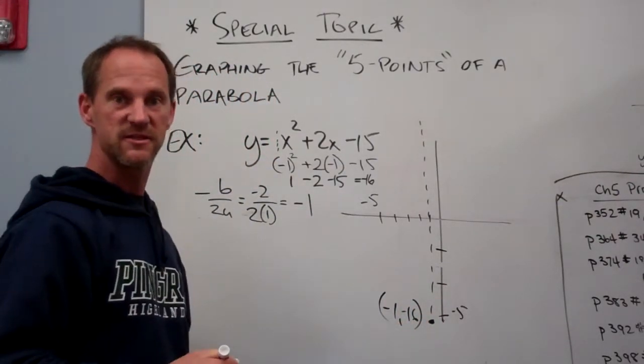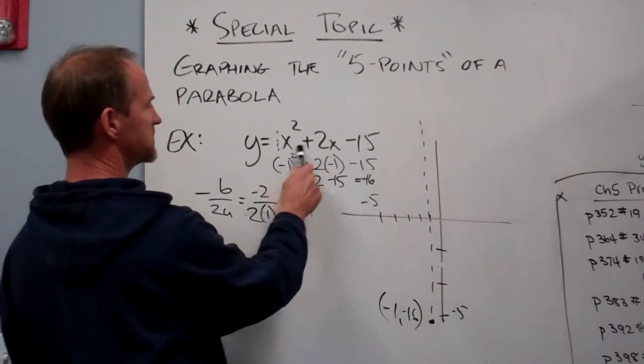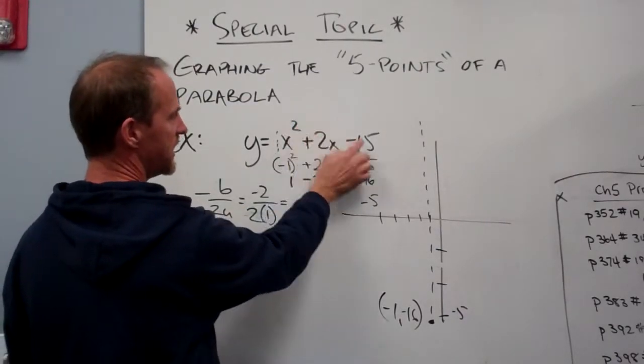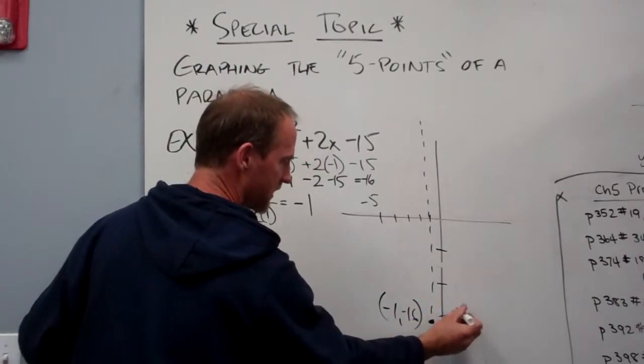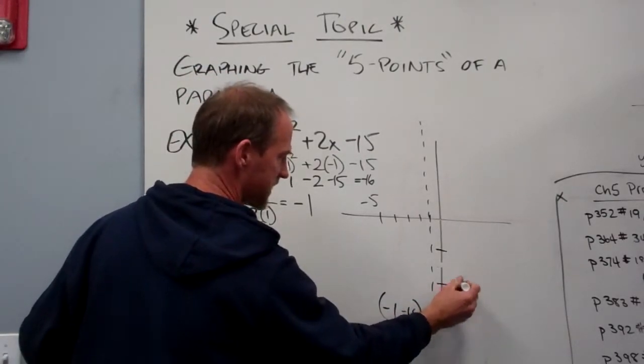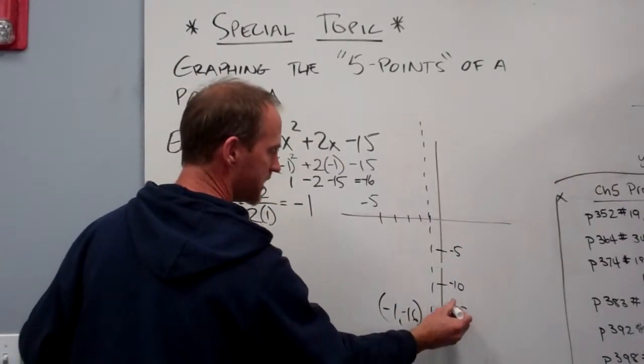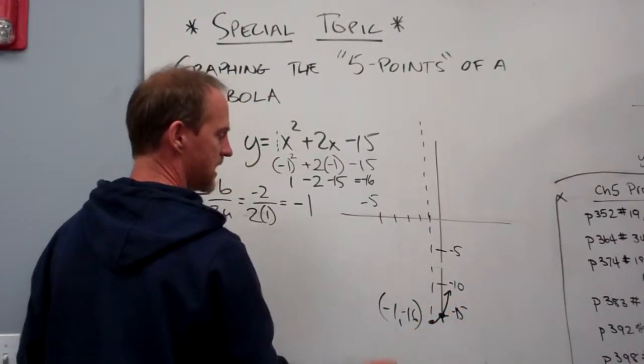My other point is my y-intercept, and I just plug in 0. This is when it's easier to do that because those both become 0, and it's negative 15. So it opens up. That's negative 15, there's negative 10, negative 5. There's the intercept going up.